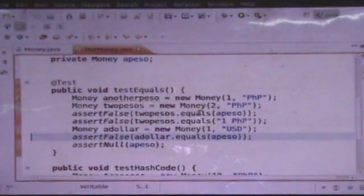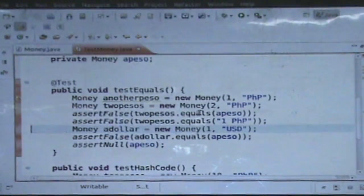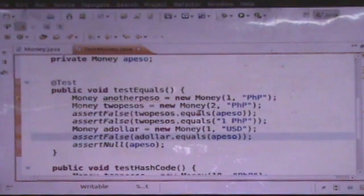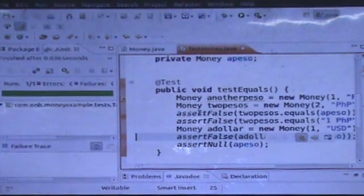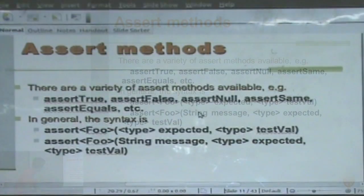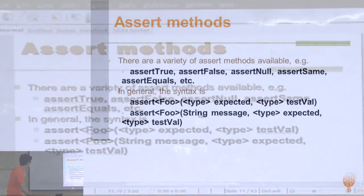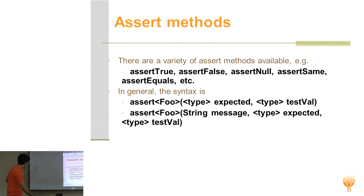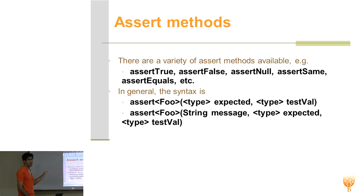Does everybody get that? I deleted the object before and now the peso is null. So we just saw the syntax: you have assert and the type of thing you're trying to assert — the type of the variable, the expected value, and the actual value of the object you're using.